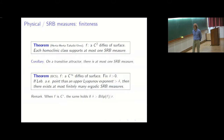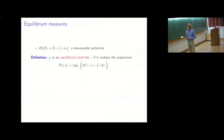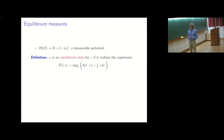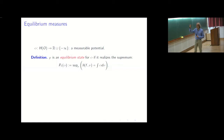Here we need C^∞ or some bound for the result. SRB measures, and now we have a common setting for these two classes of measures: the equilibrium measures. It is defined once you give a measurable map on the manifold or on the class. You consider a measurable function called the potential, and you say a measure is an equilibrium state for that potential if it achieves the supremum of the pressure — the supremum over measures of the entropy plus the integral of the potential.